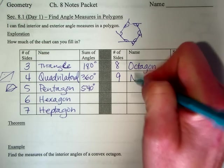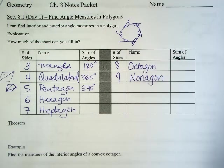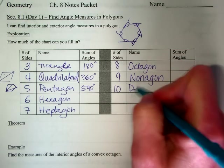Eight sides is an octagon. Nine is called a non-agon. Ten sides is called a decagon.